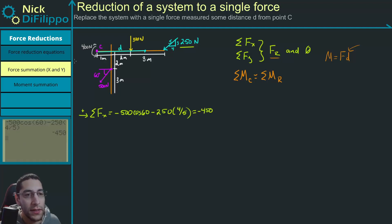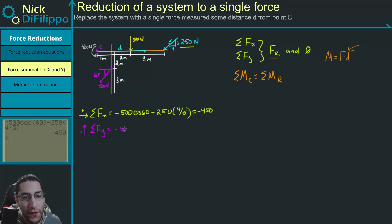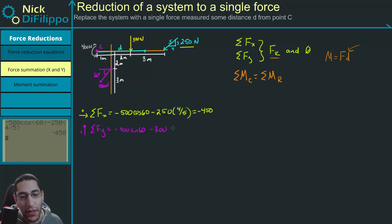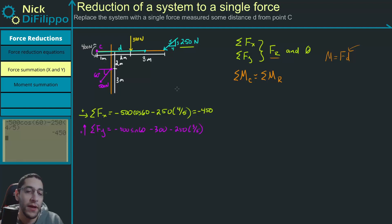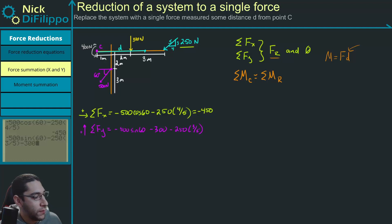Now let's look at the sum of the forces in the y, saying anything up is positive. We're going to have minus 500 times the sine of 60, minus 300 — because this force is pointing downward — and minus 250 times 3 over 5. Computing that, we get this is equal to minus 883.